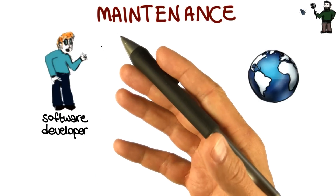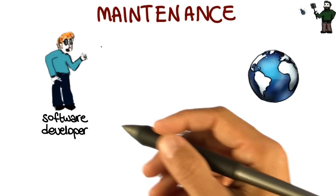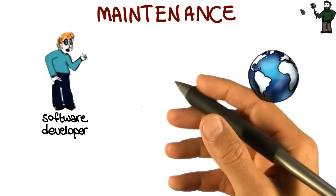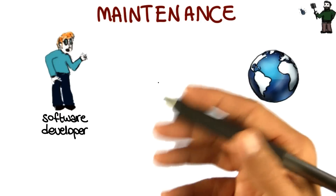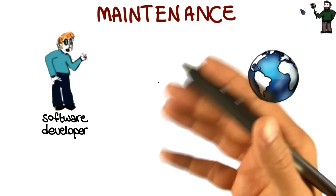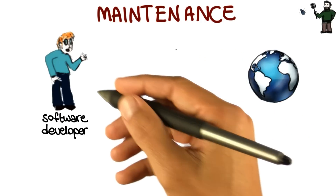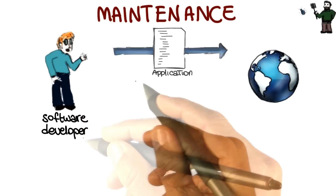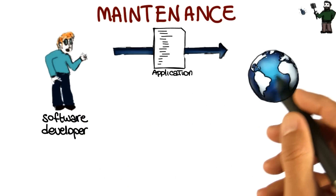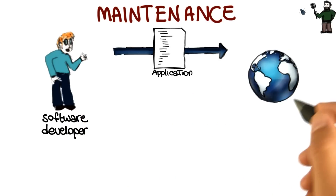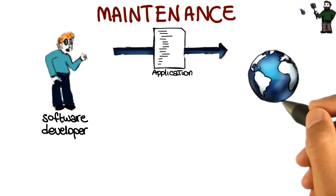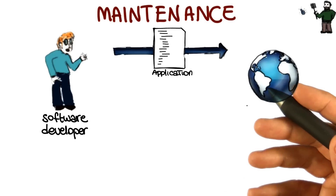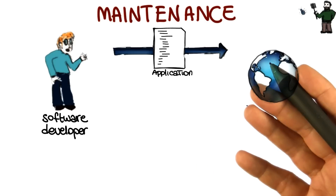As we discussed before, software development efforts normally result in the delivery of a software product that satisfies the user requirements. Normally, our software development organization will release this application to its final users. However, once the software is in operation, many things can happen.